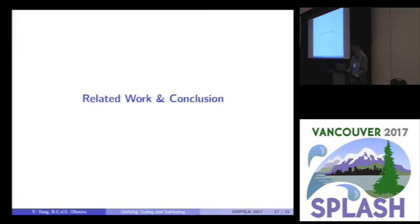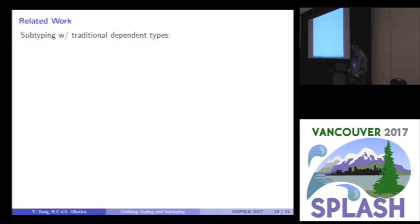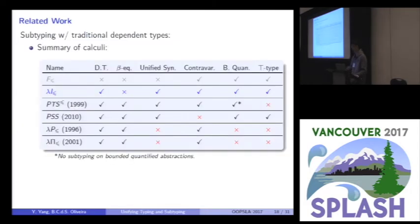Finally, some related work. There are basically two types of related work to our work. The first one is the subtyping with traditional dependent types. We already showed this table before. And we add one more line for our calculus, lambda i sub. We can see that in our calculus, we can support all these three features to subsume system F sub.